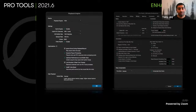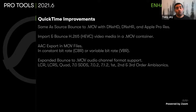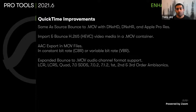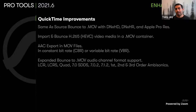We also added QuickTime improvements to release 21.6. You can now do same-source bounce to MOV with DNxHD, DNxHR, and Apple ProRes. You can import and bounce H.265 videos into a Pro Tools session — so if you have a video shot on an iPhone, you no longer need third-party software to convert it. You can also do AAC export in MOV files in either constant bitrate or variable bitrate, plus a large number of new channel formats have been added to expanded bounce for MOV audio, starting with LCR all the way up to third-order ambisonics.